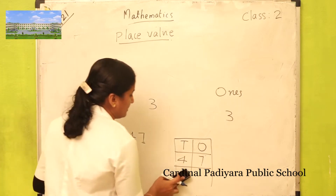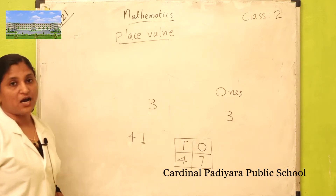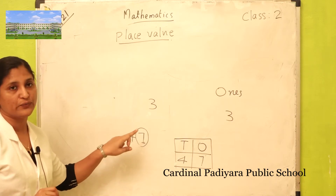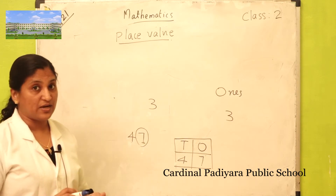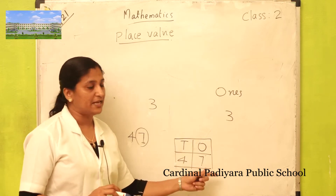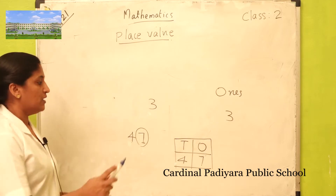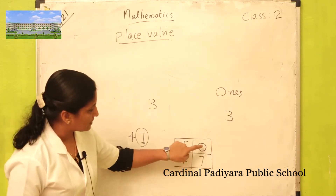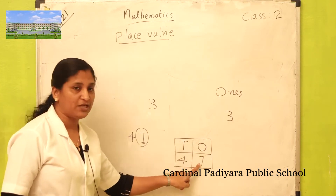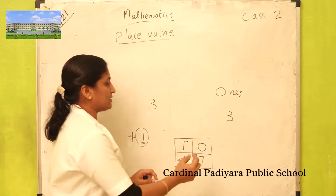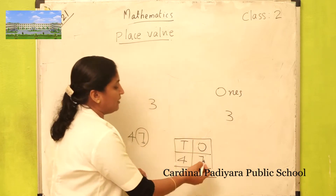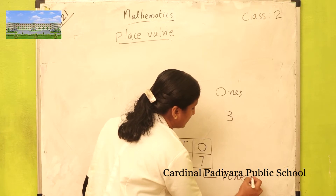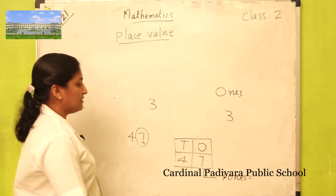How do you find out the place value of seven in forty-seven? First, look at which place seven is in — seven is in ones place. So how many ones? Seven ones. Seven ones is seven. The place value of seven in forty-seven is seven.